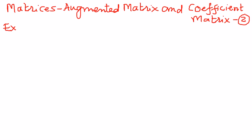Let us say we have an augmented matrix like this: 4, negative 5, 5, negative 2, 3, 1, like that.